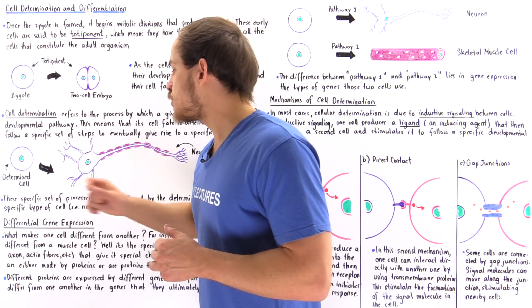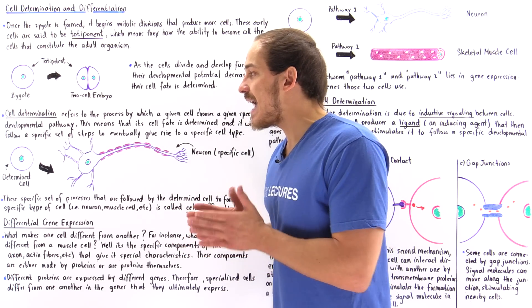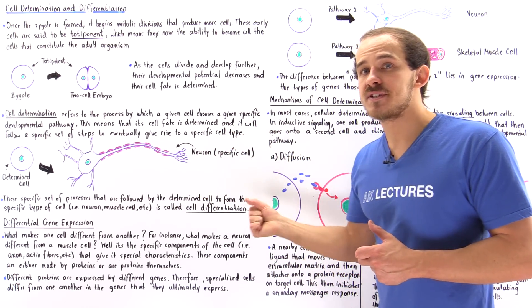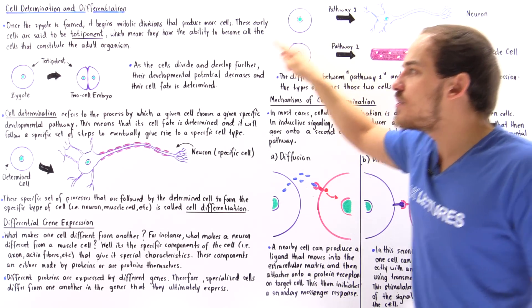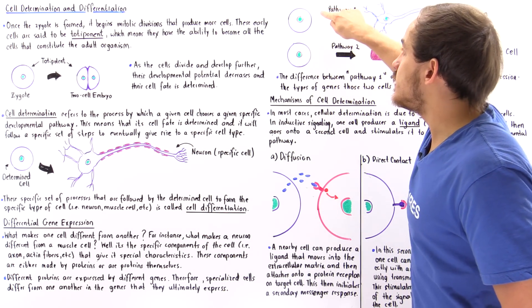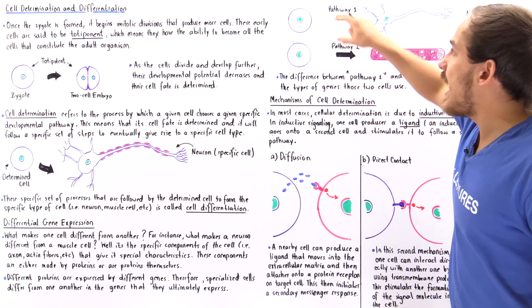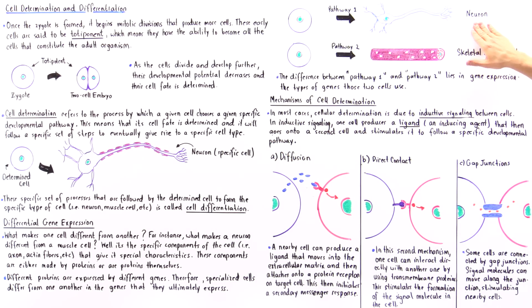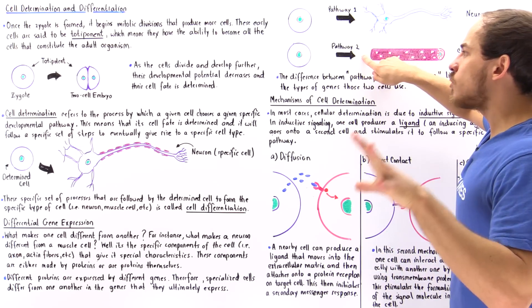Next, let's discuss differential gene expression. Differential gene expression is actually what allows a cell that has been determined to produce that specialized type of cell. In this diagram, we have an unspecialized cell that undergoes cell determination and chooses pathway one, while a second unspecialized cell chooses pathway number two. Pathway one leads to a neuron while pathway two leads to a skeletal muscle cell. So what exactly is the difference between pathway one and pathway two?